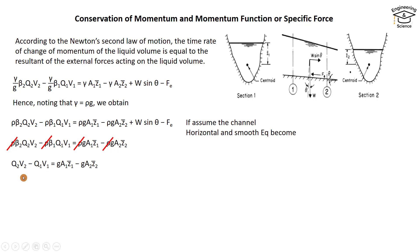The equation becomes Q₂V₂ - Q₁V₁ = gA₁z̄₁ - gA₂z̄₂. After rearranging, we get Q₁V₁ + gA₁z̄₁ = Q₂V₂ + gA₂z̄₂.